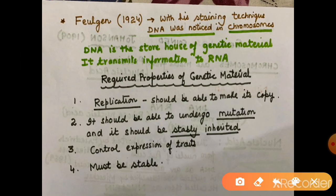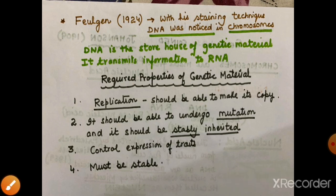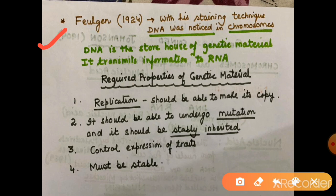Later in 1924, staining techniques were used. It was noticed that DNA is part of chromosomes. DNA is the storehouse of genetic information or genetic material. DNA gives information which is expressed as RNA. DNA is present in all cells in the same quantity. So if we are to call DNA the genetic material, there are key important properties that should be found in it.